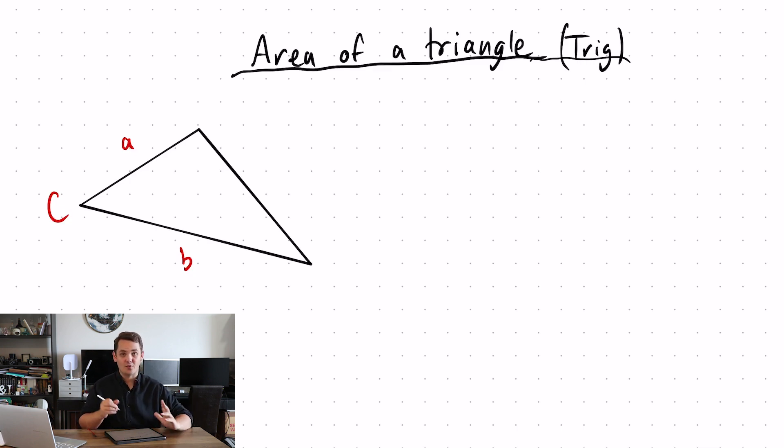The formula for the area of a triangle is half A, B, sine C. So if you know two sides and you know the angle between it, you can work out the area of a triangle.